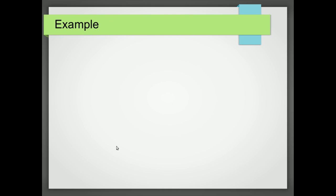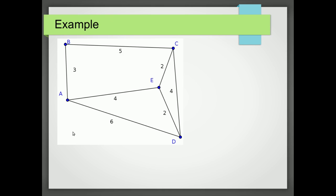Now for an example. Here's our network connecting the points A, B, C, D and E. We want the minimum spanning tree and we're going to use Prim's algorithm. So the first thing we do is pick a point. I've picked the point A. What's the shortest path connected to A? Well that's the path AB. So I'm going to highlight AB and record that by writing AB equals 3.